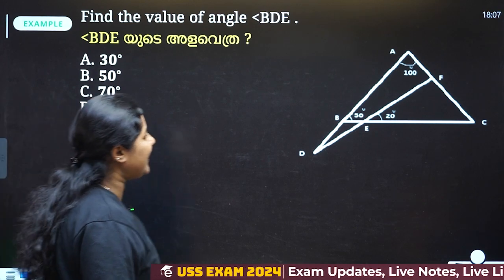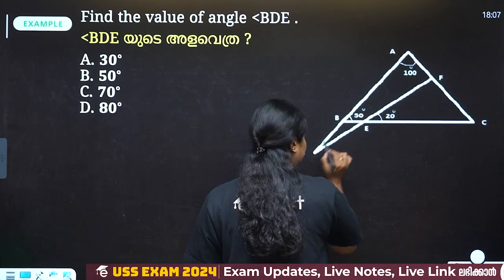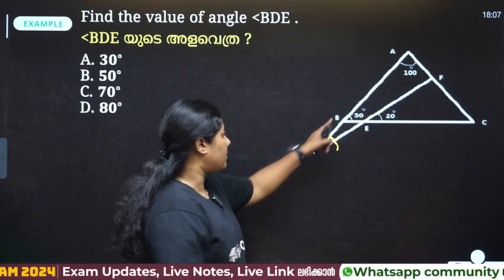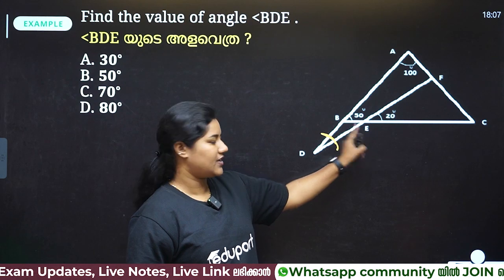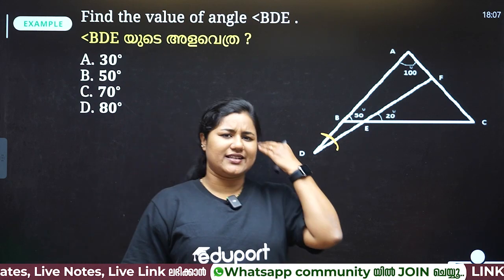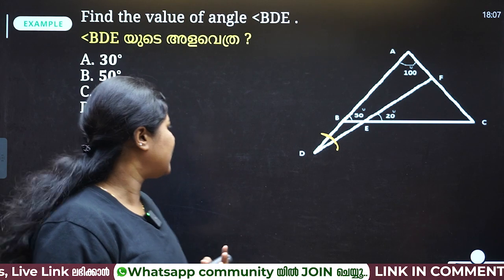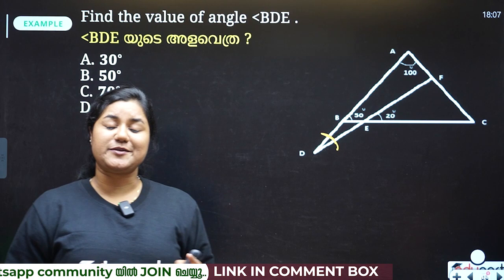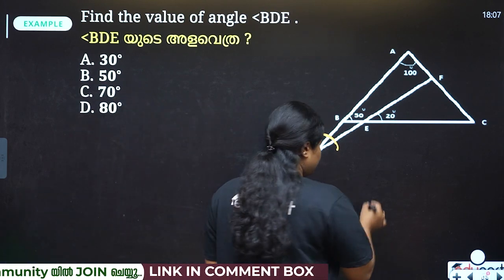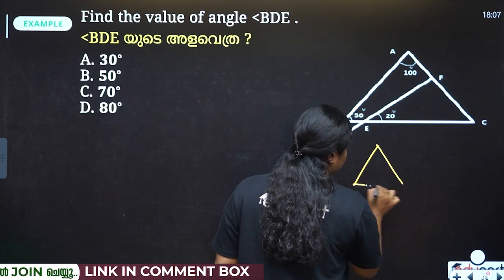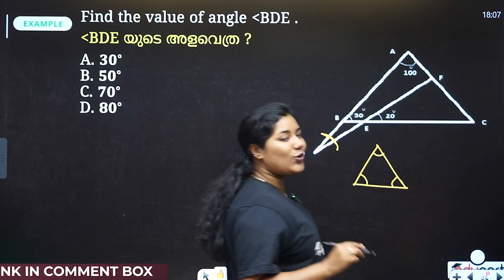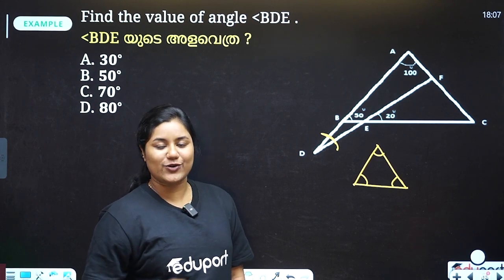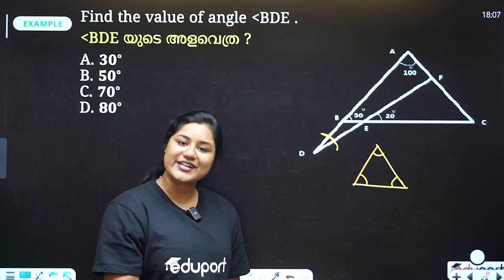Find the value of angle BDE. Angle BDE is the middle angle. We learned that this is a triangle. We don't know how to explain the angles in the triangle yet. There is a triangle. You can also draw the triangle. We find that the sum of angles in a triangle is 180 degrees.